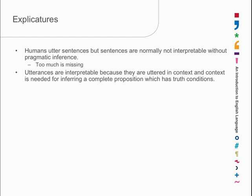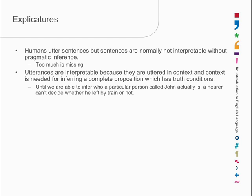Utterances are interpretable because they're uttered in a context, and the context, as we've also seen, is used for inferring a complete proposition, which in turn can have truth conditions assigned to it. So we're able to infer who a particular person called John actually is in context. A hearer can't decide whether the person left by train or not unless they infer who the particular John is that left by train.